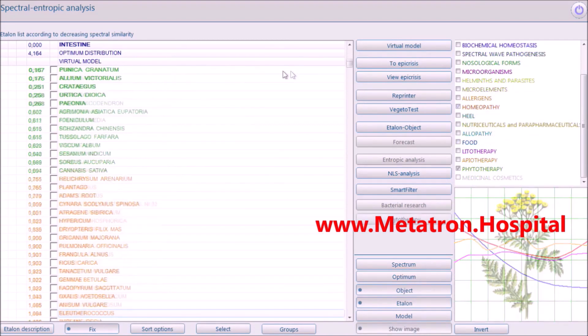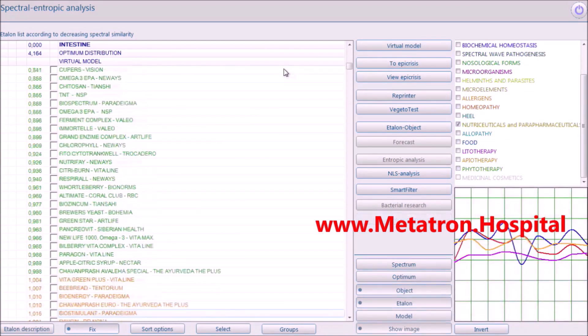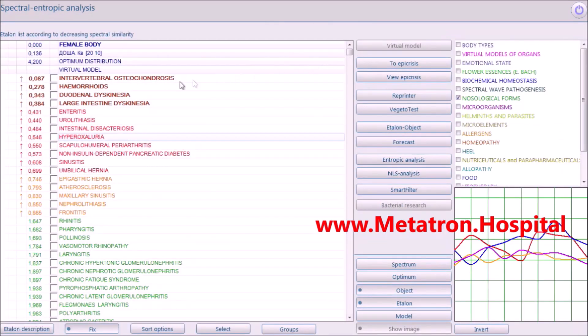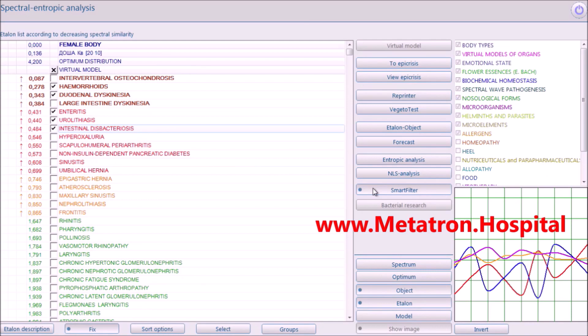Metatron Remote can be applied at any distance using the client information, which is used as a medium for quantum link between the Metatron device and the client. This was referred to as instantaneous action at a distance by Einstein. Modern physicists named it quantum entanglement.